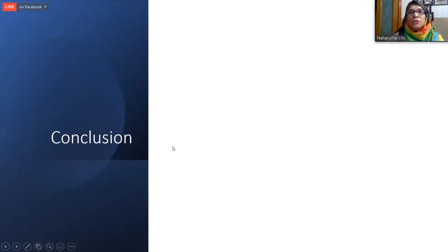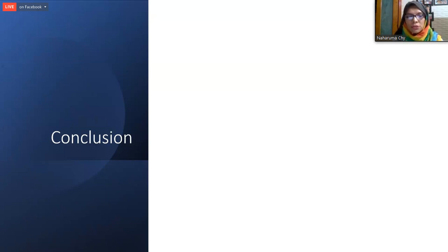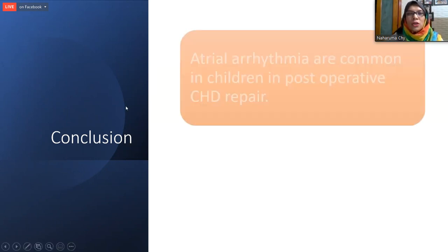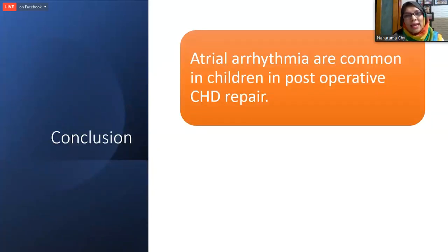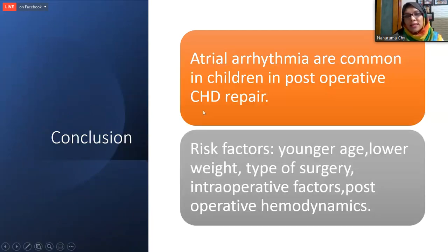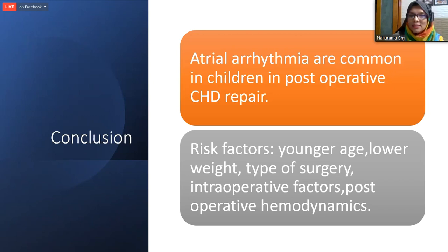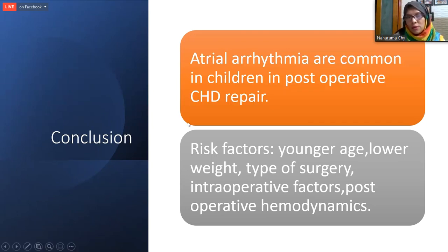In conclusion, in a postoperative case where lots of hemodynamic changes, scar, and inflammation occur, we should not focus on a single diagnosis — we should consider the different arrhythmic activities occurring. Atrial arrhythmias are common in children after post-operative congenital heart disease repair. Risk factors include younger age, lower weight, and type of surgery. Intraoperative factors such as cardiopulmonary bypass time and cross clamp time are very important, as is postoperative maintenance of ventricular function and electrolyte balance to prevent arrhythmia.